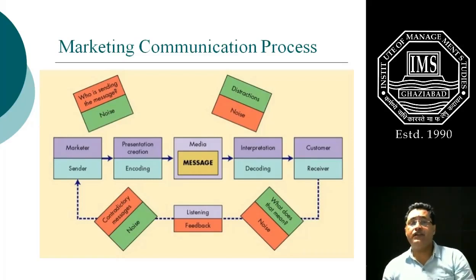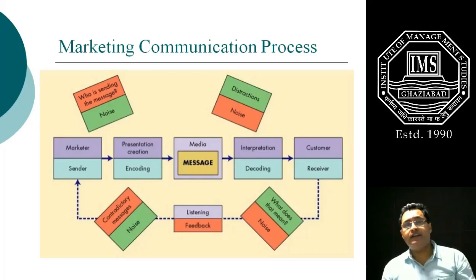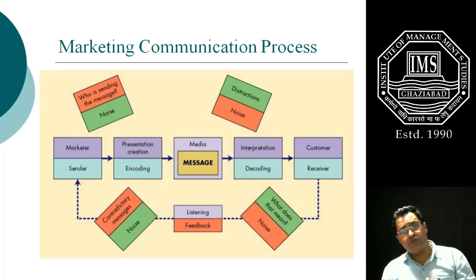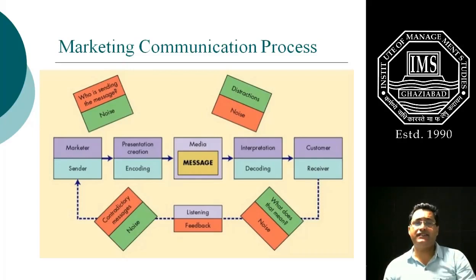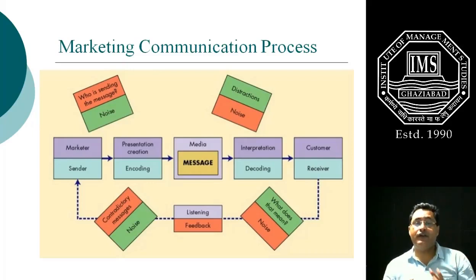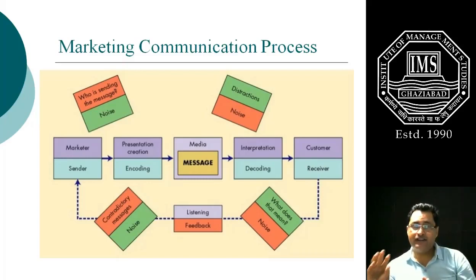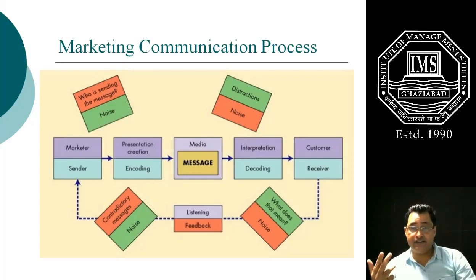When we talk about the marketing communication process, the communication is started by the marketer. So when we talk about the sender, the main sender is the marketer — a businessman, any agency. What does the sender do? The sender encodes the message. Encoding the message means, after understanding the needs of the customers, I make a creation of ideas — what customers want and how I should give more than what the customer wants.